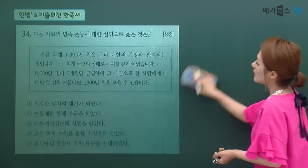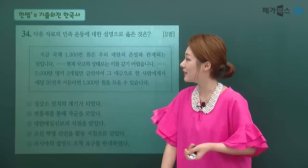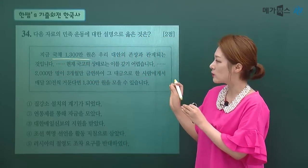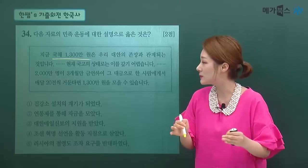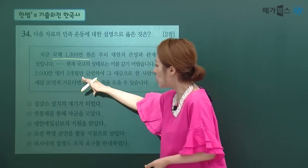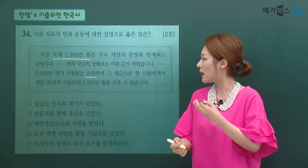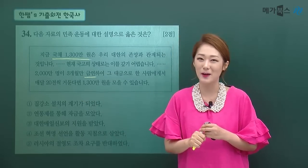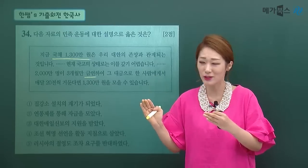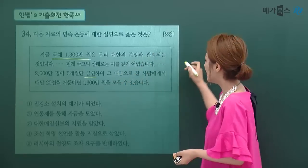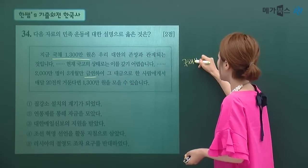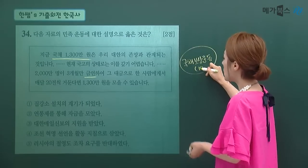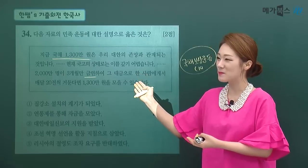34번 문제입니다. 다음 자료에 나타난 민족운동에 대한 설명으로 옳은 것을 고르라는 문제입니다. 국채 1,300만원은 우리 대한의 존망과 관계가 된 것으로 현재 국고 상태로는 갚기 어려우니, 2천만 명이 3개월만 금연해서 1인당 매달 20전씩 거둔다면 1,300만원을 모을 수 있다는 내용입니다. 이것은 국채보상운동 이야기로, 당시 우리나라가 일본에 진 빚이 1,300만원이었습니다.